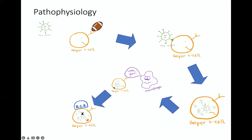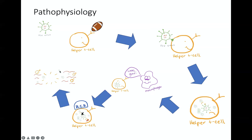Once we've replicated all these little HIV viruses and made the T cell into an HIV-making factory, the HIV virus actually kills that helper T cell and makes it self-destruct. Now we have all those HIV viral particles made by that helper T cell floating around in the bloodstream, ready to go attack more helper T cells. That is how HIV replicates in the body.